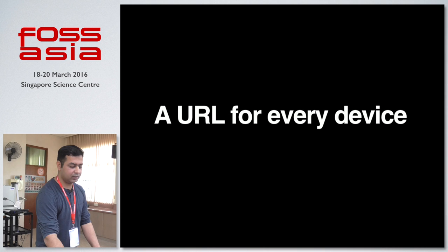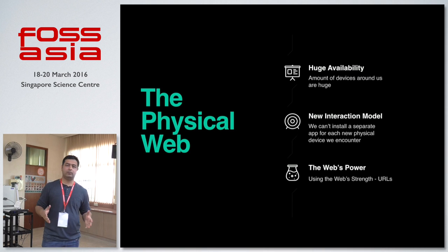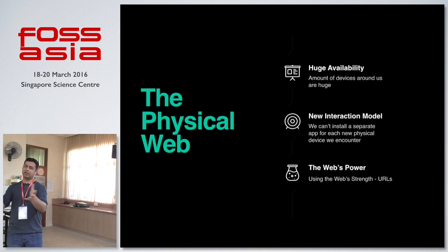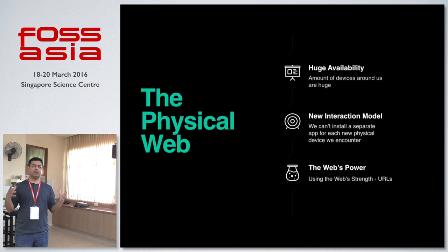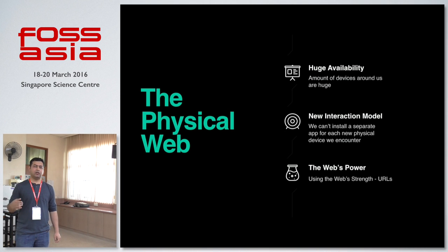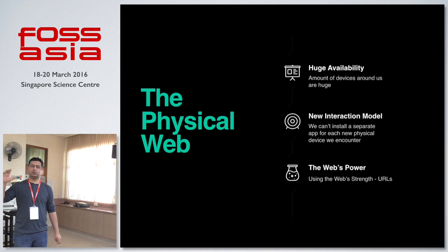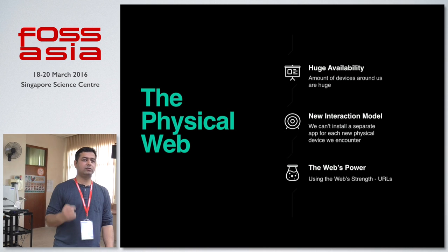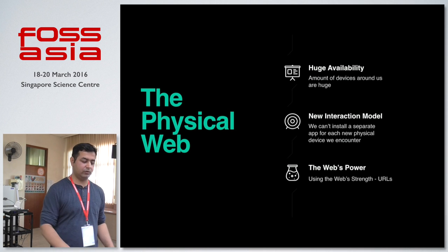And this is the idea behind what we call the physical web. The physical web is kind of like almost like a movement. The whole idea is that each and every device or each and every thing will have its own unique URL. And if you want — or if the maker of that thing wants — they can make that URL. You can go there, you can interact with that device. And it uses the web's power, which is sharing of URLs.